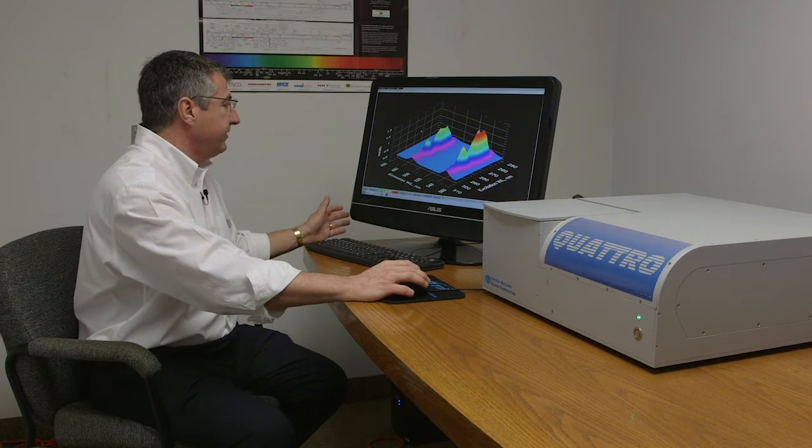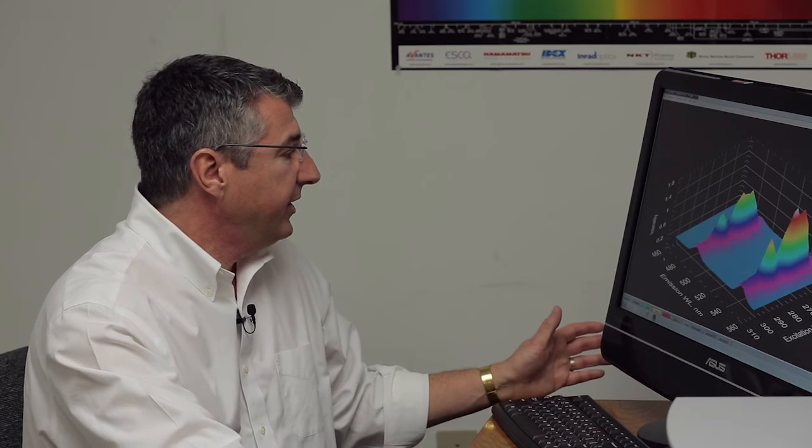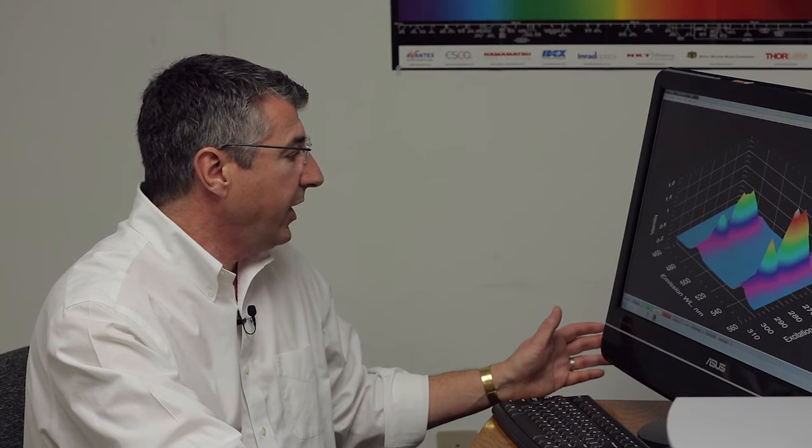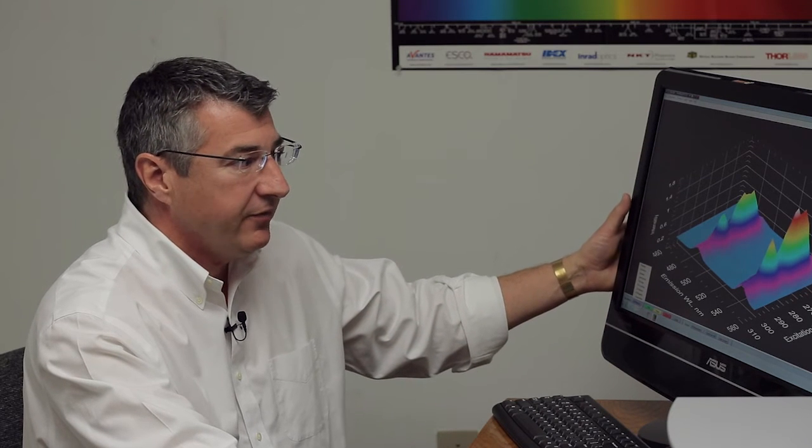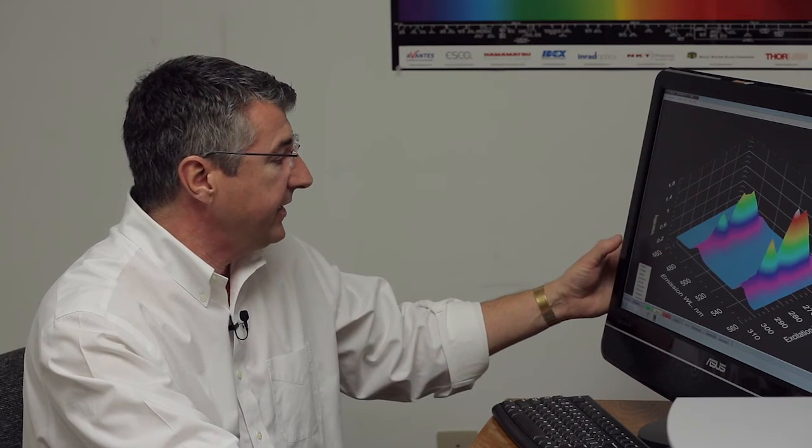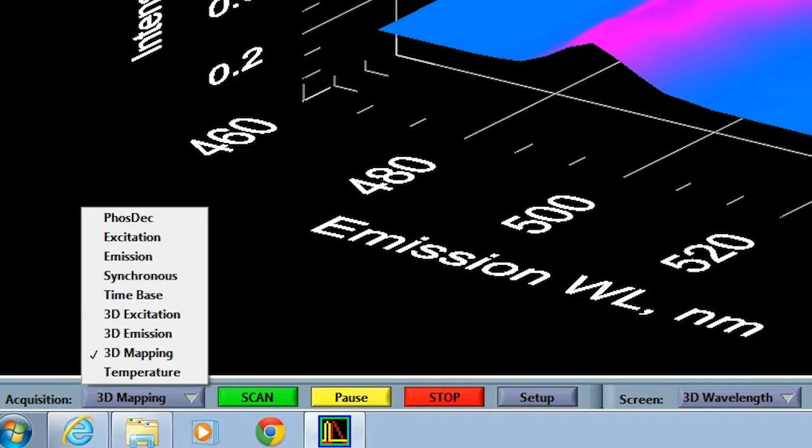The software is really extremely simple to operate. It allows you to acquire a variety of different kinds of fluorescence and phosphorescence spectra or decays. You can see here from the pull down there's a lot of choices that are available to you but primarily the instrument is designed to look at spectra, typically fluorescent spectra, but it can also be phosphorescence spectra because we're using a gated approach.